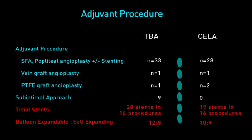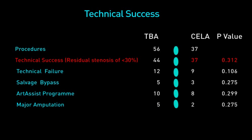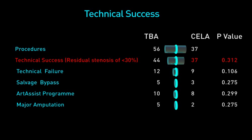Concomitant proximal angioplasty was performed through the sub-intimal plane more commonly in the TBA group. There was no difference in the number of stents inserted for both groups. Technical success was defined as residual stenosis of less than 30% after TBA or laser, and was achieved in 80% of the laser group.